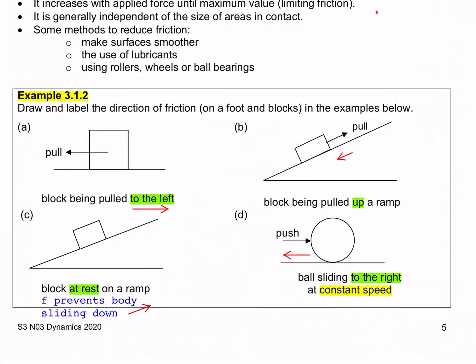Example 3.1.2a: The block is being pulled to the left, so the block will be moving to the left relative to the ground. To oppose this relative motion, the friction force will act to the right at the surface of contact between the block and the ground.